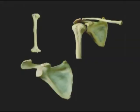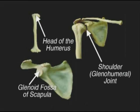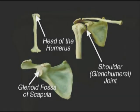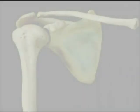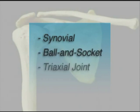The shoulder joint, also known as the glenohumeral joint, is located between the head of the humerus and the glenoid fossa of the scapula. It is the most mobile joint in the human body. It is a synovial, ball and socket, triaxial joint that allows motion within three planes around three axes.